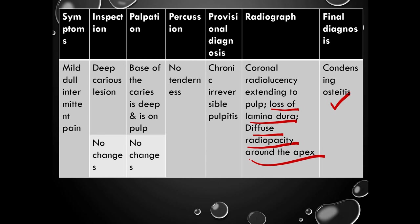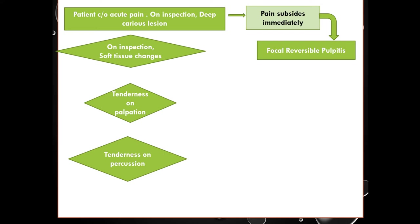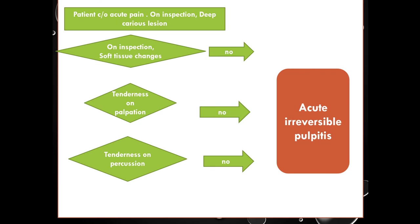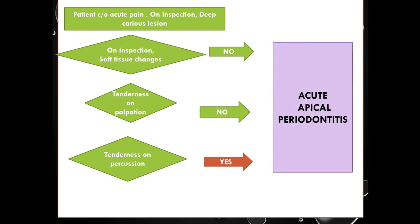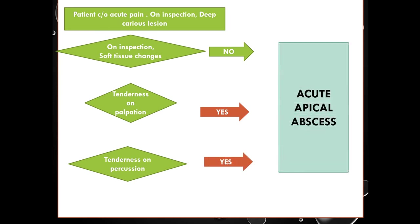These are some of the pulpal and periapical lesions and how we can arrive at diagnosis step by step. Coming to different scenarios: a patient complains of acute pain; on inspection, a deep carious lesion is seen. If the pain subsides immediately, it is focal reversible pulpitis. If on soft tissue inspection there are no changes, no tenderness on palpation, and no tenderness on percussion, the case is diagnosed as acute irreversible pulpitis. If there are no soft tissue changes, no changes on palpation, but there is tenderness on percussion, then it is a case of acute apical periodontitis. If on inspection there are no soft tissue changes, but there is tenderness on palpation and tenderness on percussion, then the case is diagnosed as acute apical abscess.